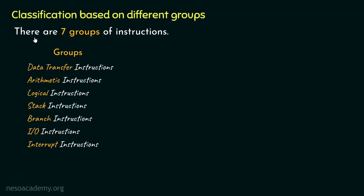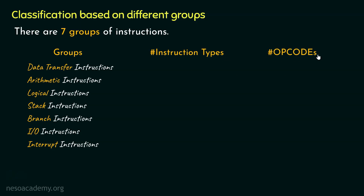In each group there are different instruction types, and within those types there are different op codes. For data transfer instructions there are 13 different instruction types and cumulatively 83 op codes.